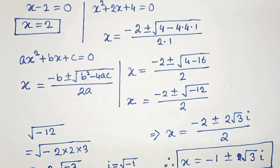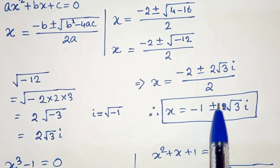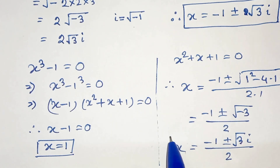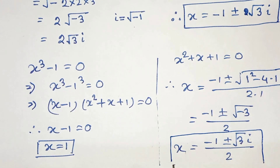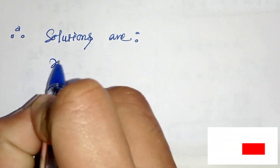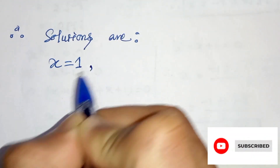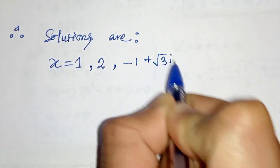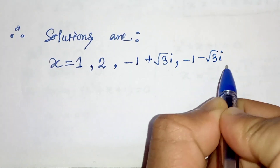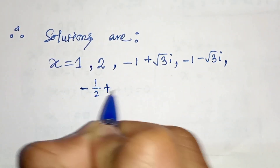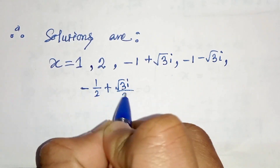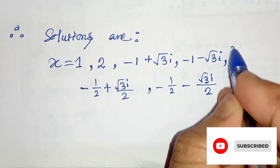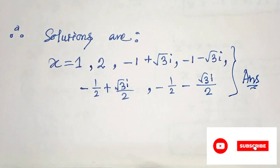Therefore we have six solutions: x equals 2, x equals 1, x equals minus 1 plus root 3 i, x equals minus 1 minus root 3 i, x equals minus one half plus root 3 i divided by 2, and x equals minus one half minus root 3 i divided by 2. So these are our six solutions. Thanks for watching.